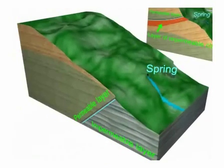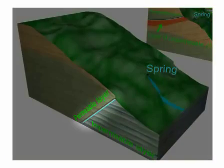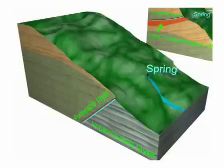Some springs form where a fault has brought together two different types of bedrock, such as a porous rock and a non-porous rock.